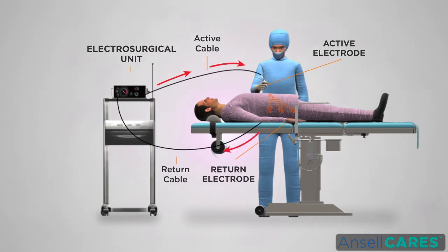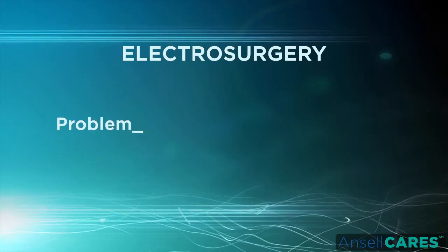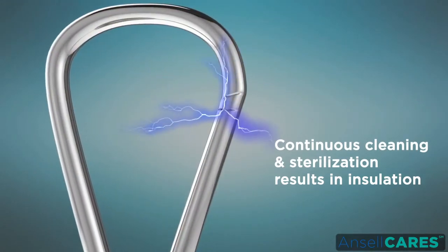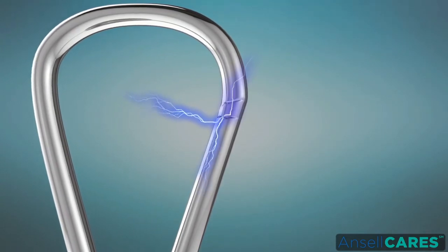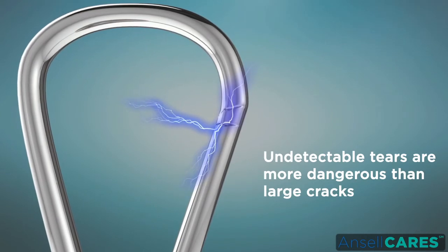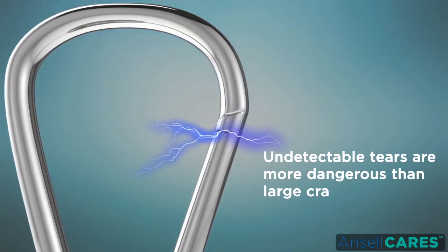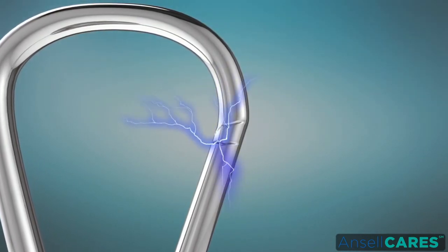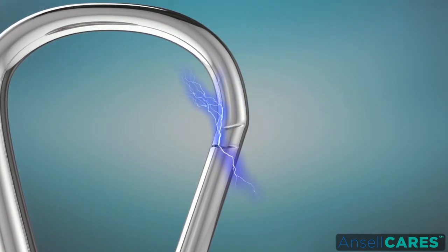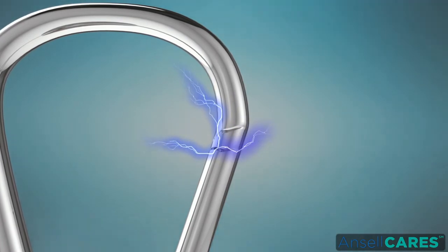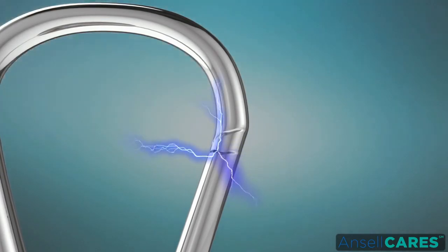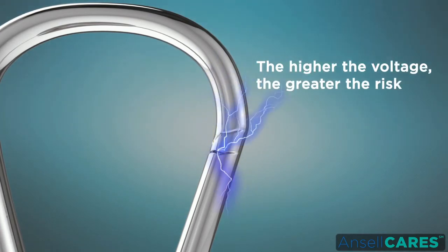Electrosurgery is a safe and efficient instrument for both invasive and minimally invasive surgical procedures if basic safety measures are applied. Regarding insulation failure: continuous cleaning and sterilization results in formation of a thin layer of insulation covering the shaft of the active electrode. Undetectable tears are more dangerous than large cracks, since the current escaping from these minuscule breaks is more concentrated and therefore capable of causing sparks averaging 700 degrees Celsius. These sparks can cause severe burns and even ignite fires, especially in oxygen-rich environments and with other highly flammable substances. Routine use of high voltage coagulation current may actually compromise insulation integrity — the higher the voltage, the greater the risk that the current will break through weak insulation.